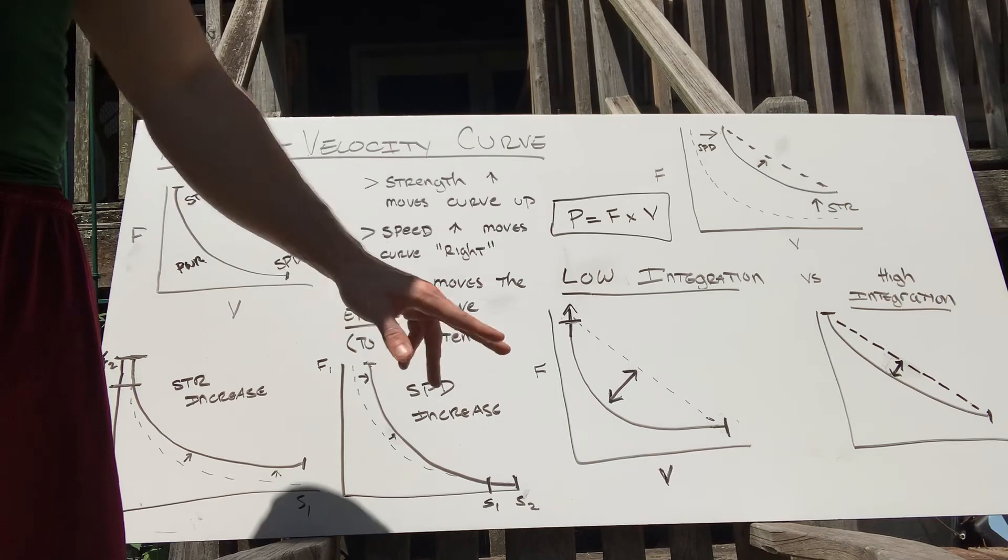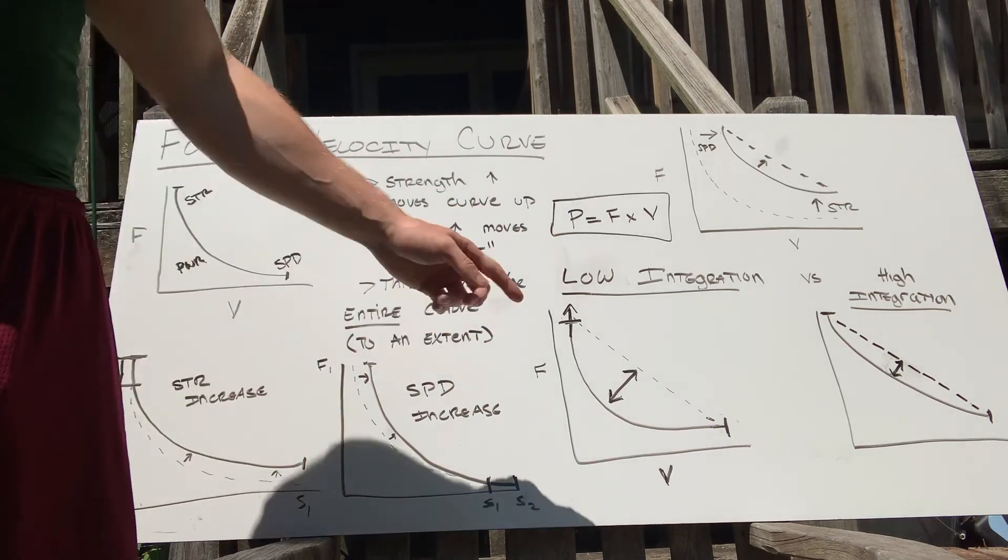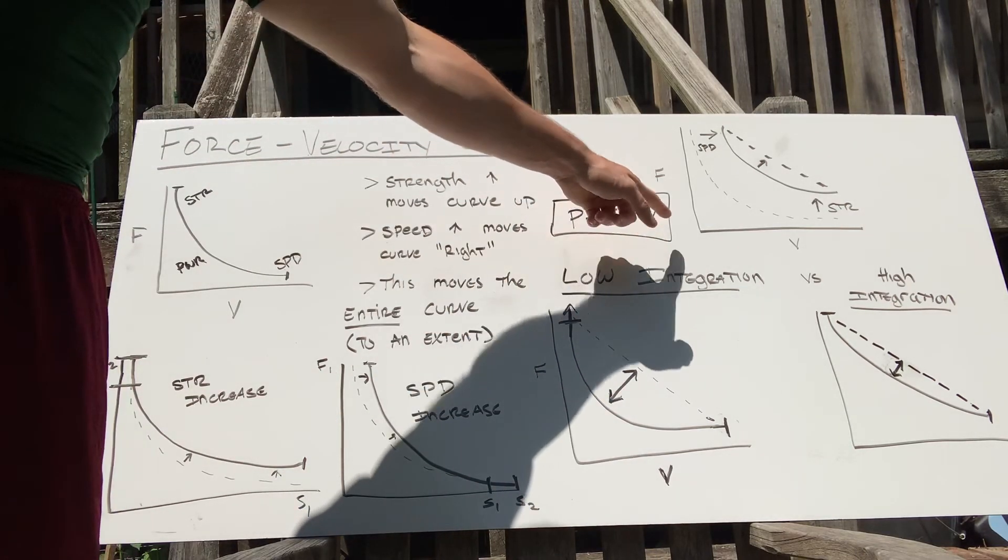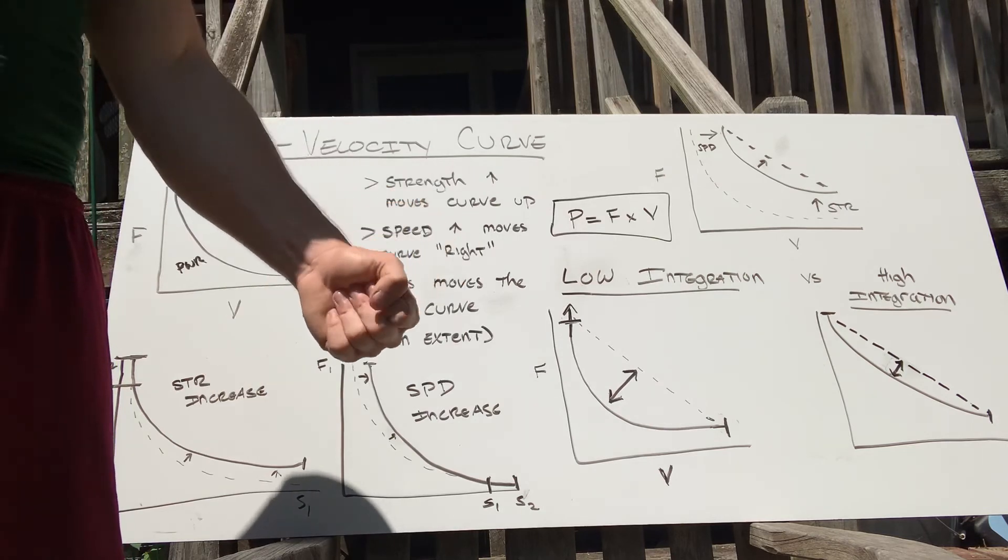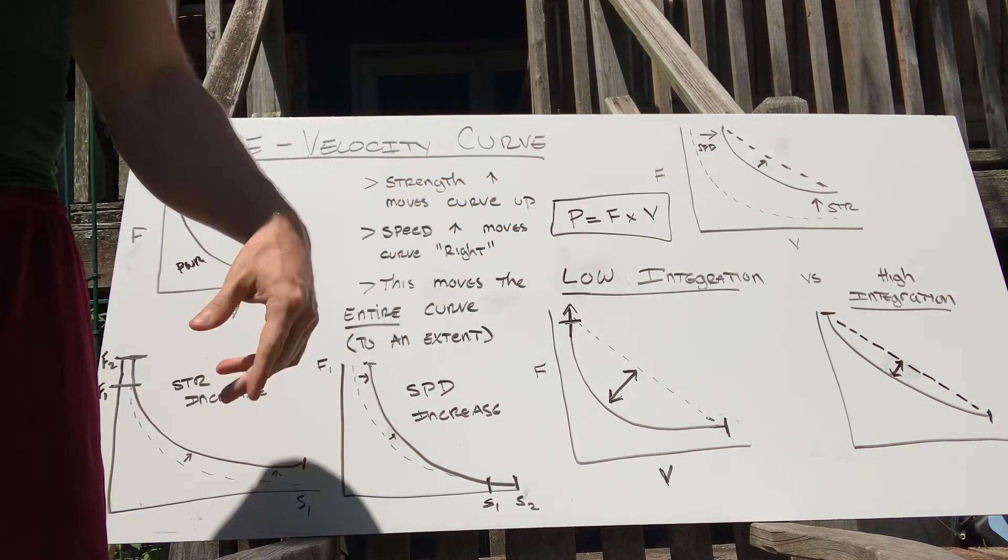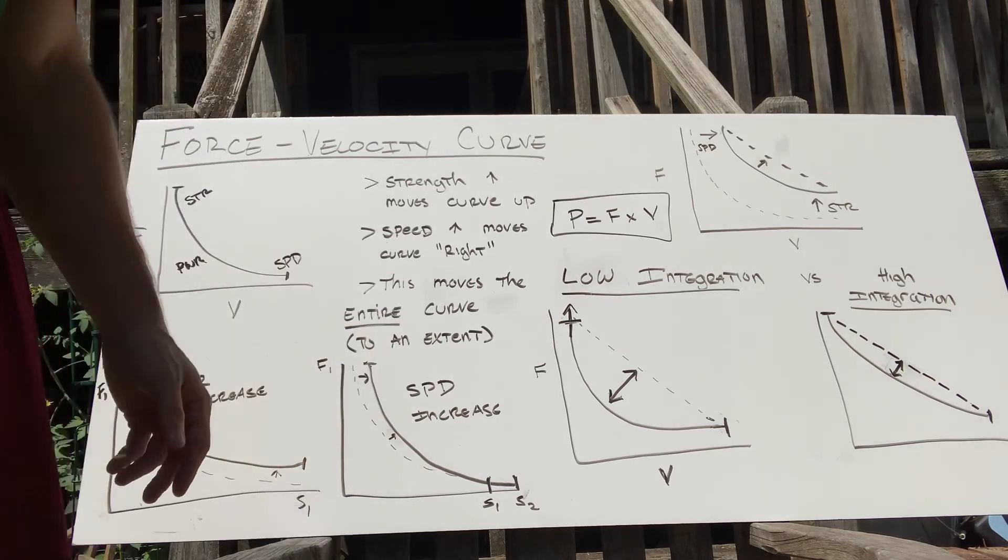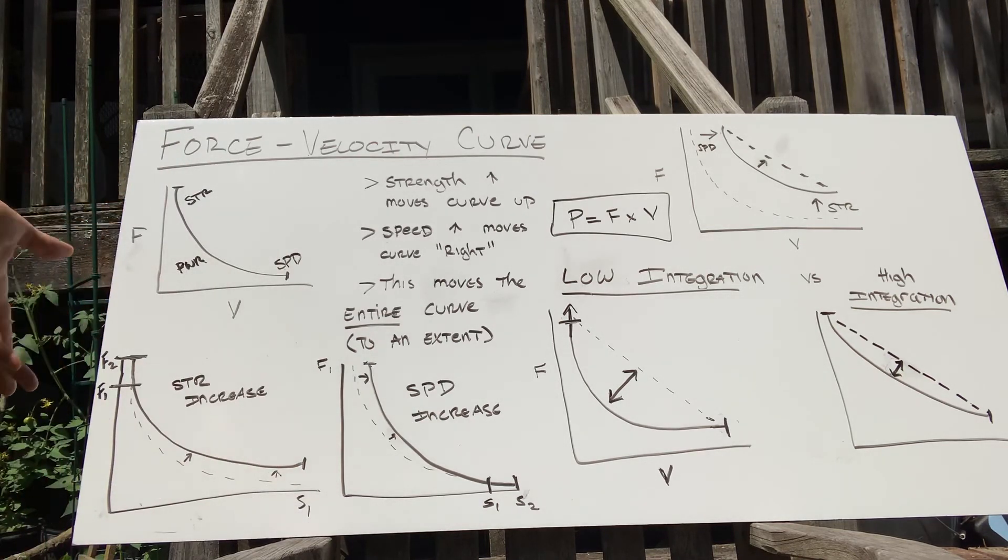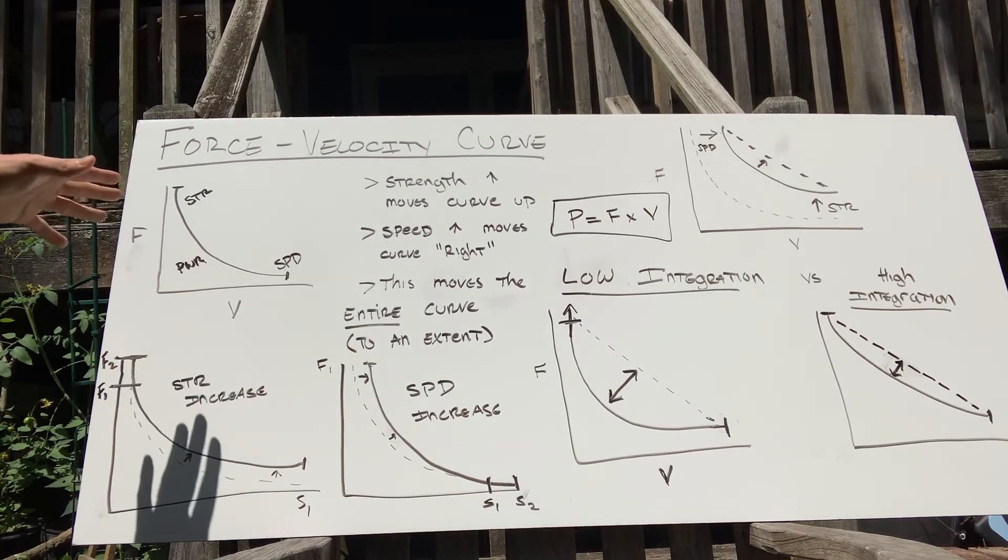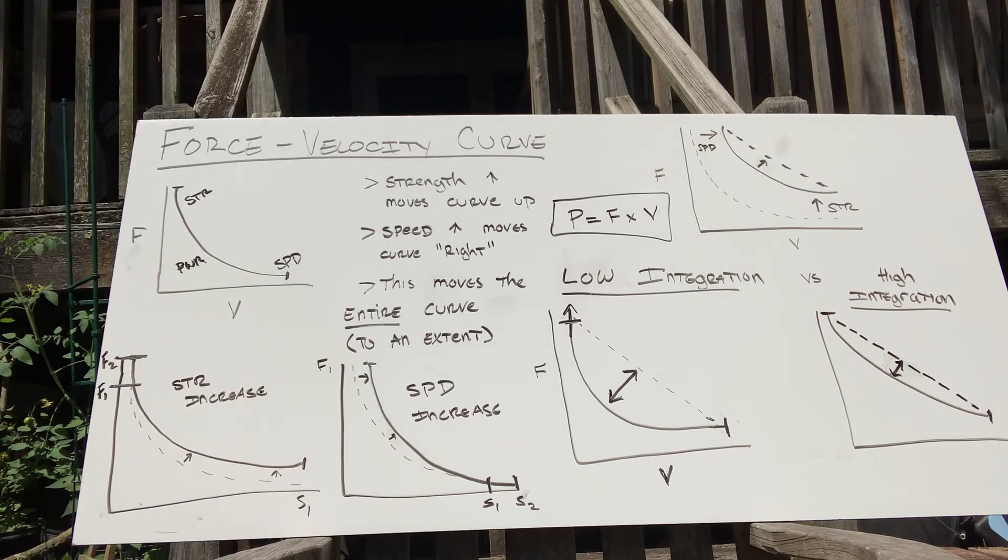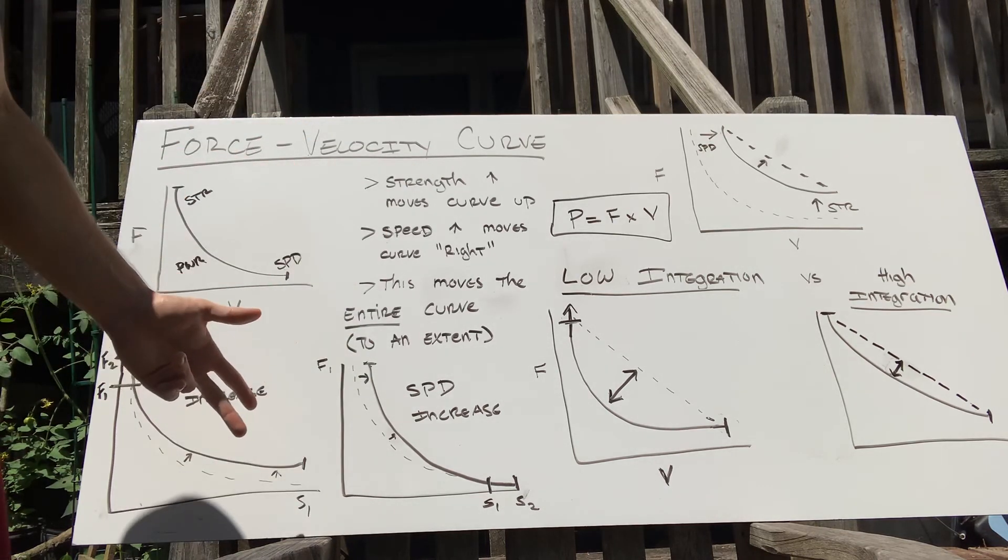And they should become increasingly important as you get more advanced, but most of your gains are just going to come from increasing F and increasing V, which is just going to be basically squat, sprint, bench press, throw, bench press, punch—that's pretty much your thing. So I hope this was helpful to you guys. We're going to go over more in-depth of this stuff, but I wanted to make something short that was useful to you so everyone's clear on the force-velocity curve as we continue through this curriculum.